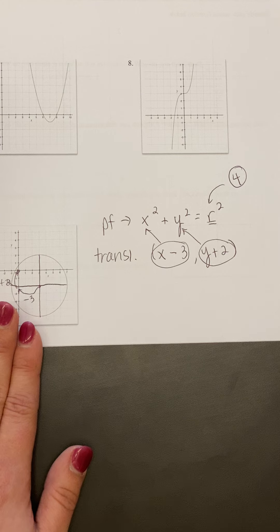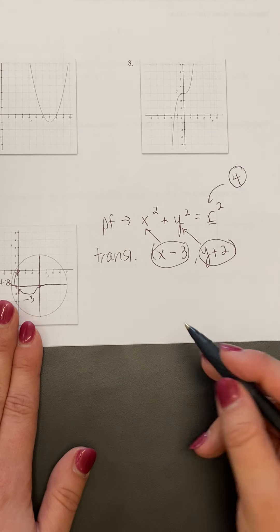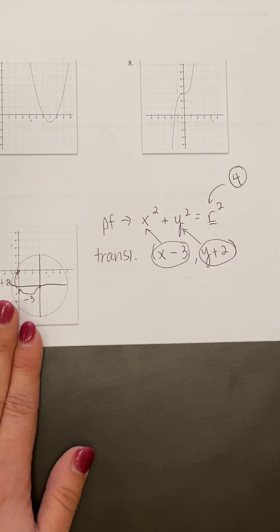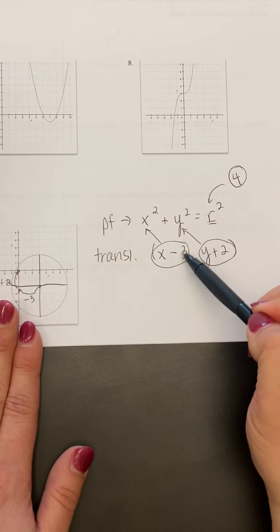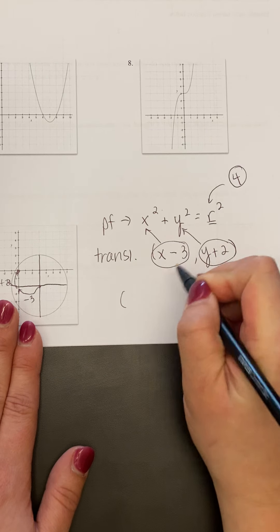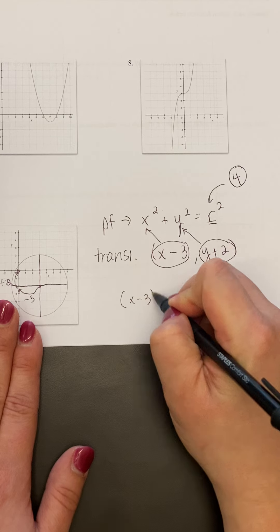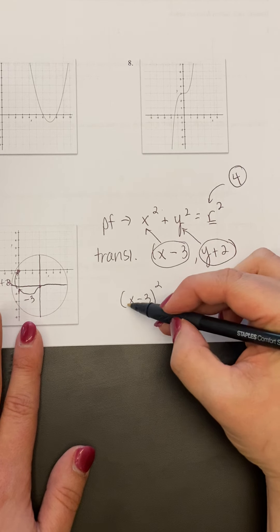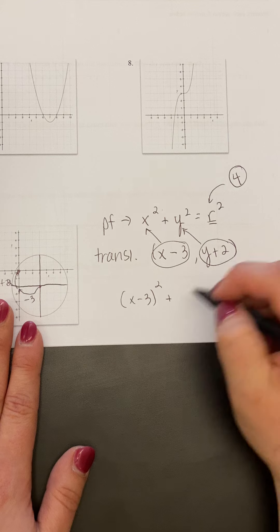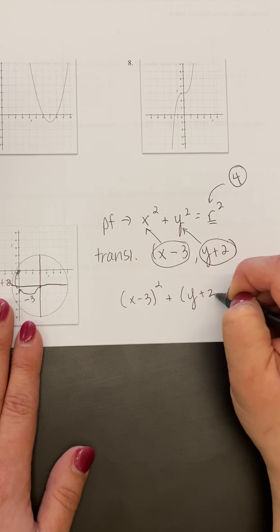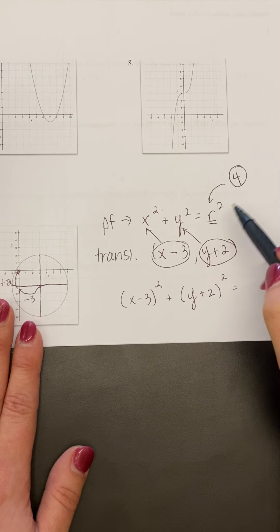Now remember, when you're plugging something in exactly, you have to keep that quantity squared. So I want all of x squared. It was all squared here. So now I'm going to take quantity x minus 3 and square it.